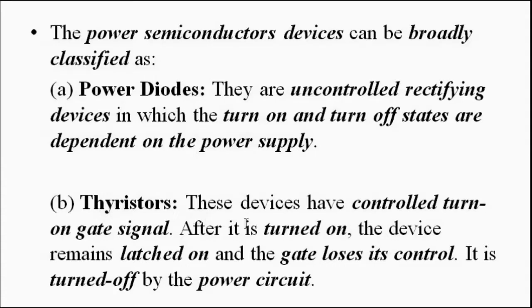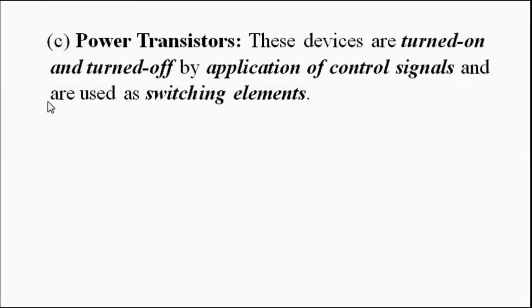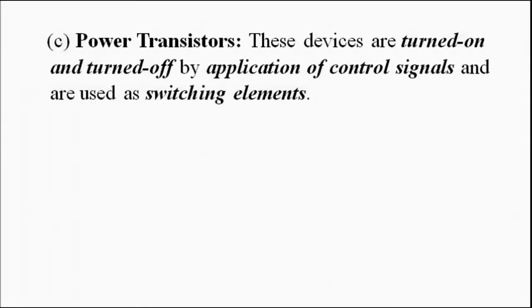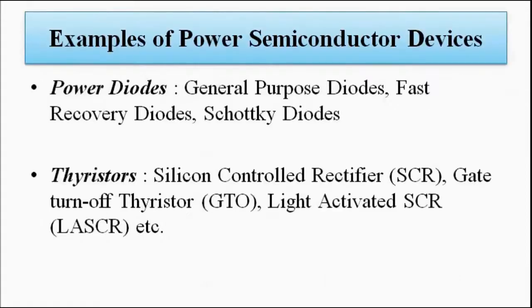Thyristors have a controlled turn-on gate signal, so here the application of gate signal comes into play. After it is turned on, the device remains in that state and the gate loses its controllability, so it is turned off by the power circuit. Similarly, power transistors are also turned on and turned off by the application of control signals and are used as switching elements. All these power semiconductor devices follow the same basic principles as discussed in analog electronics; only certain modifications in their constructional aspects make them suitable for high power applications.